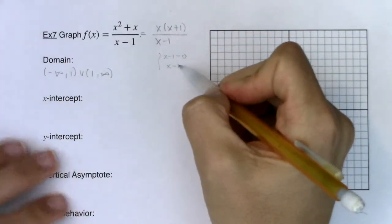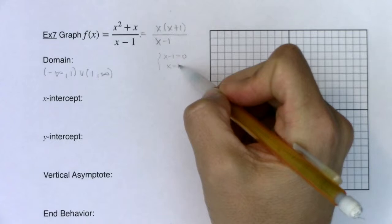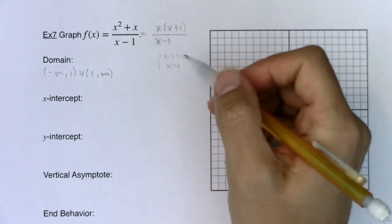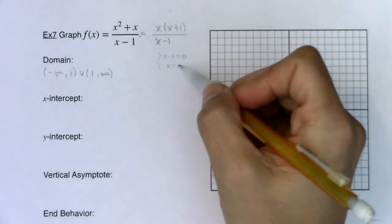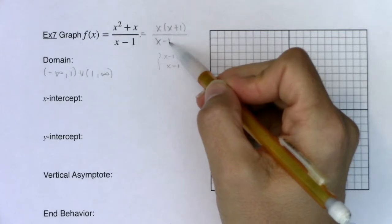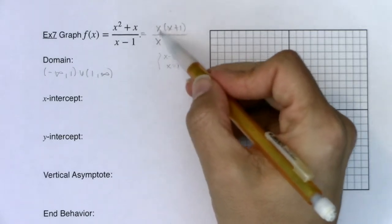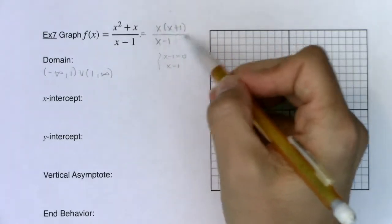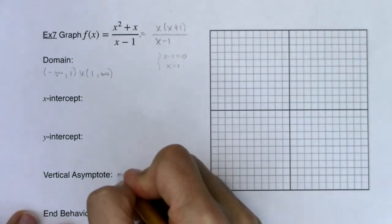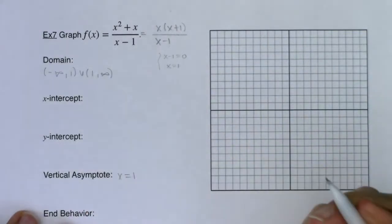And then keep in mind anytime your denominator zeros out it's either going to be a vertical asymptote or a hole. You can identify vertical asymptotes that zero out only your denominator and 1 only zeros out my denominator. 1 doesn't zero out my numerator because 1 isn't a zero for this factor and 1 isn't a zero for that factor so I know I have a vertical asymptote at x equaling 1.